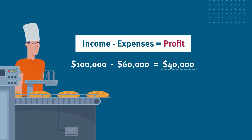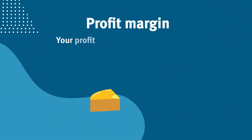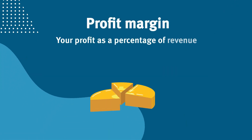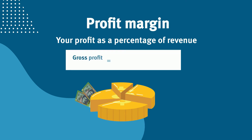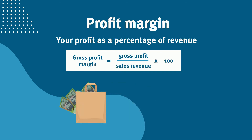Brett can now work out his profit margins to determine the overall health of his business. A gross profit margin shows if the total amount you bring in from sales — called your sales revenue —